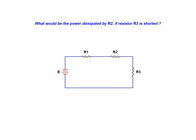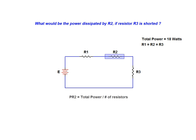To start, we review what we know about the circuit under normal operating conditions. The total power will be distributed evenly across the three equal value resistors in the circuit. This being the case, we can easily ascertain the power dissipated by resistor R2 under normal conditions, and we find that this value is equal to 6 watts.